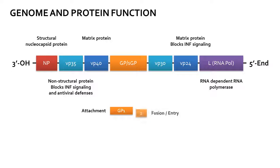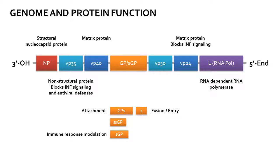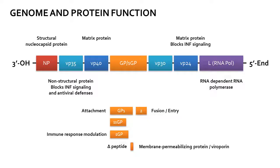Additional glycoprotein variants include GP2 for fusion and entry, SSGP and SGP implicated in immune response modulation, as well as a membrane-permeabilizing delta peptide.